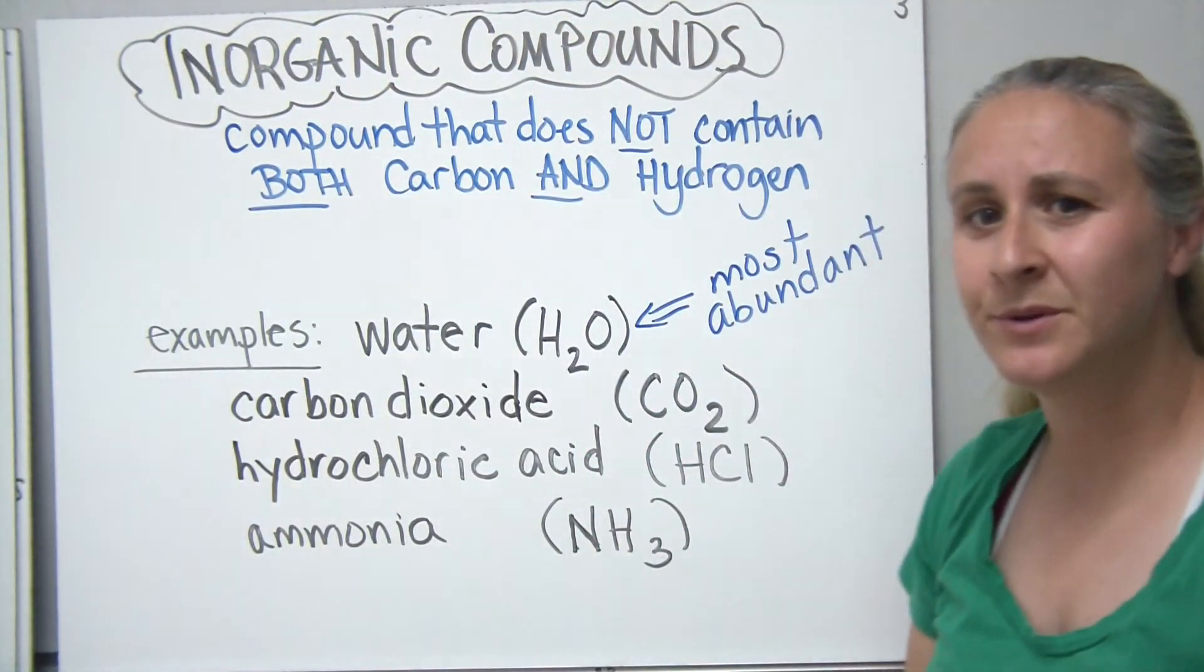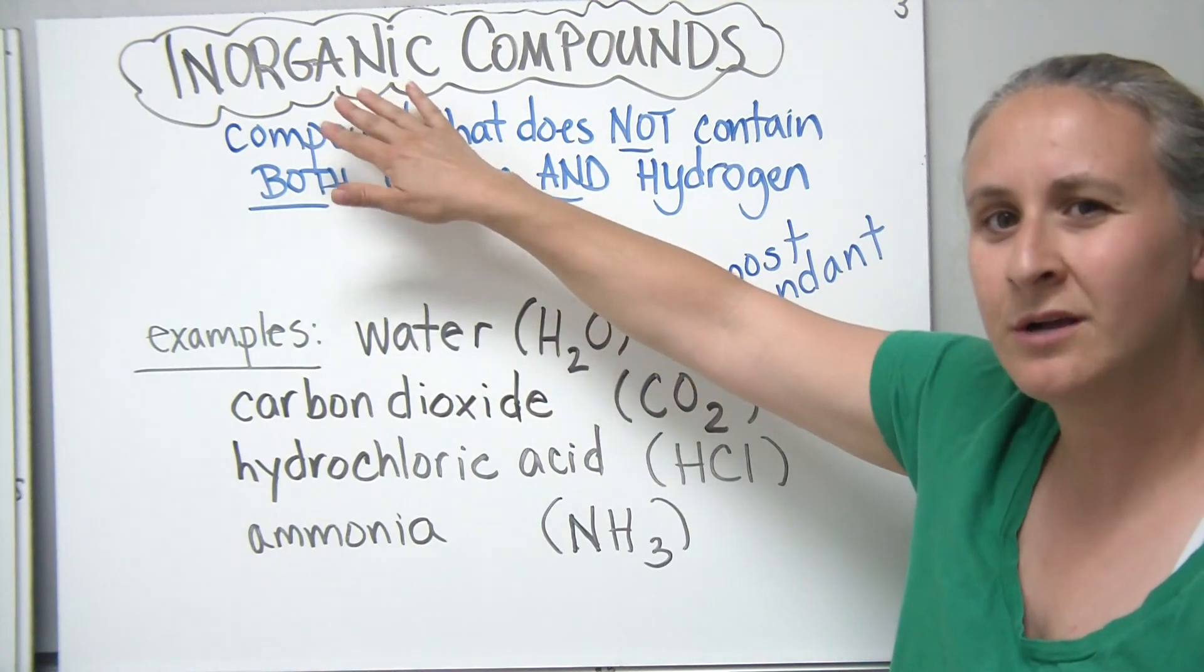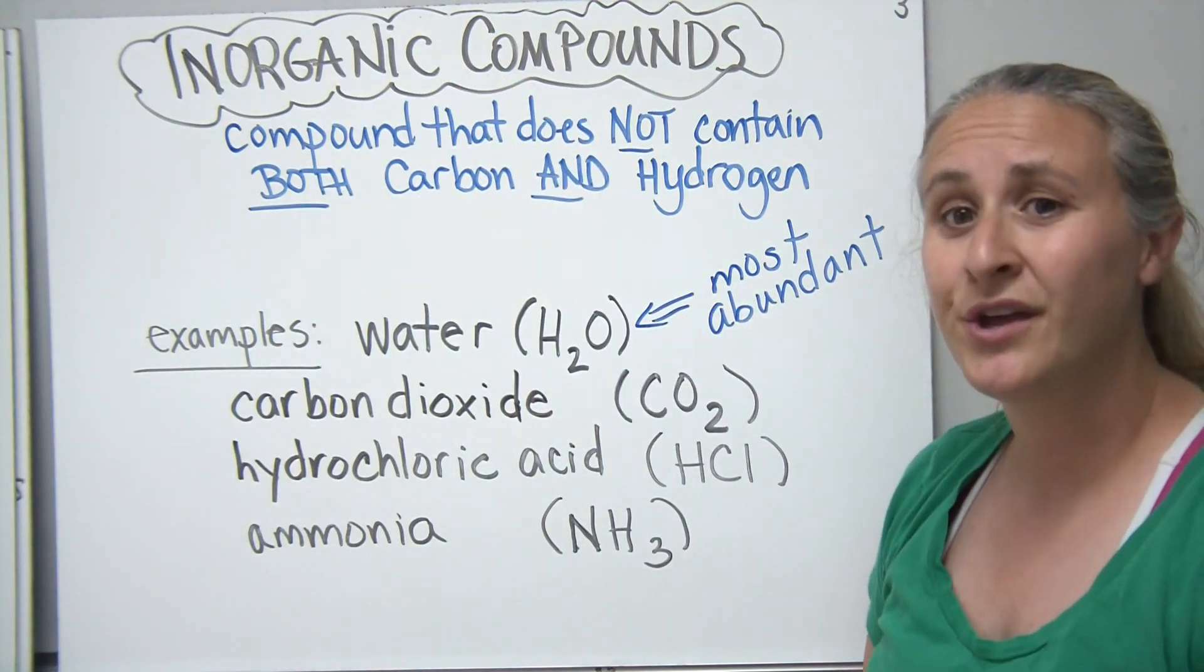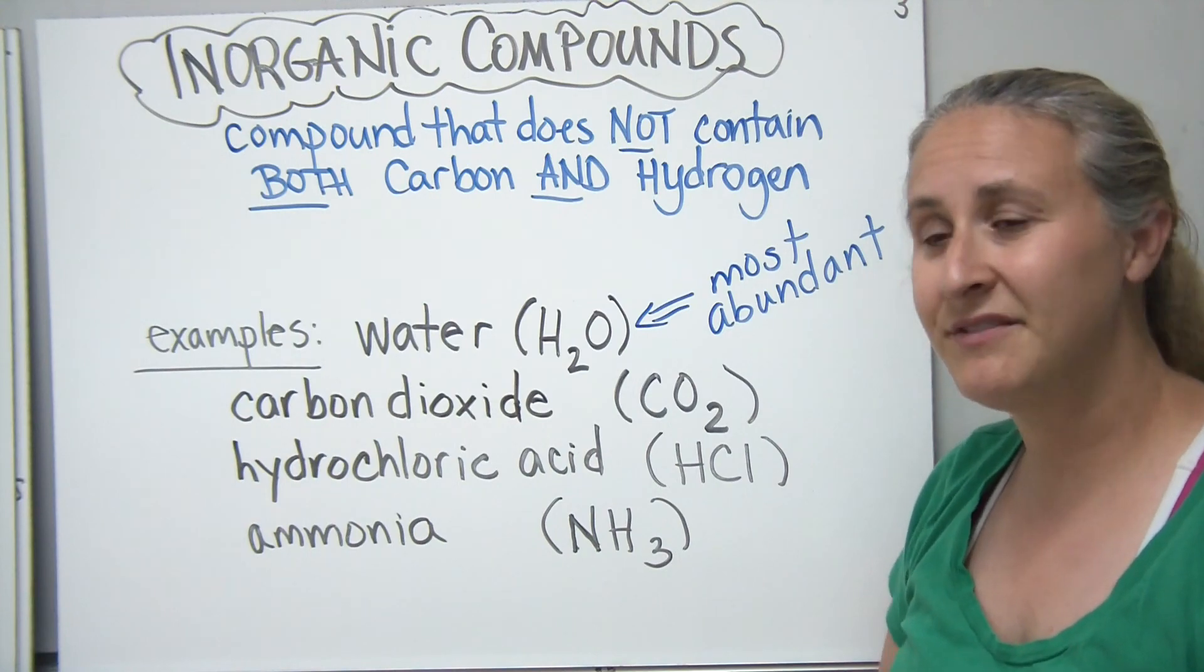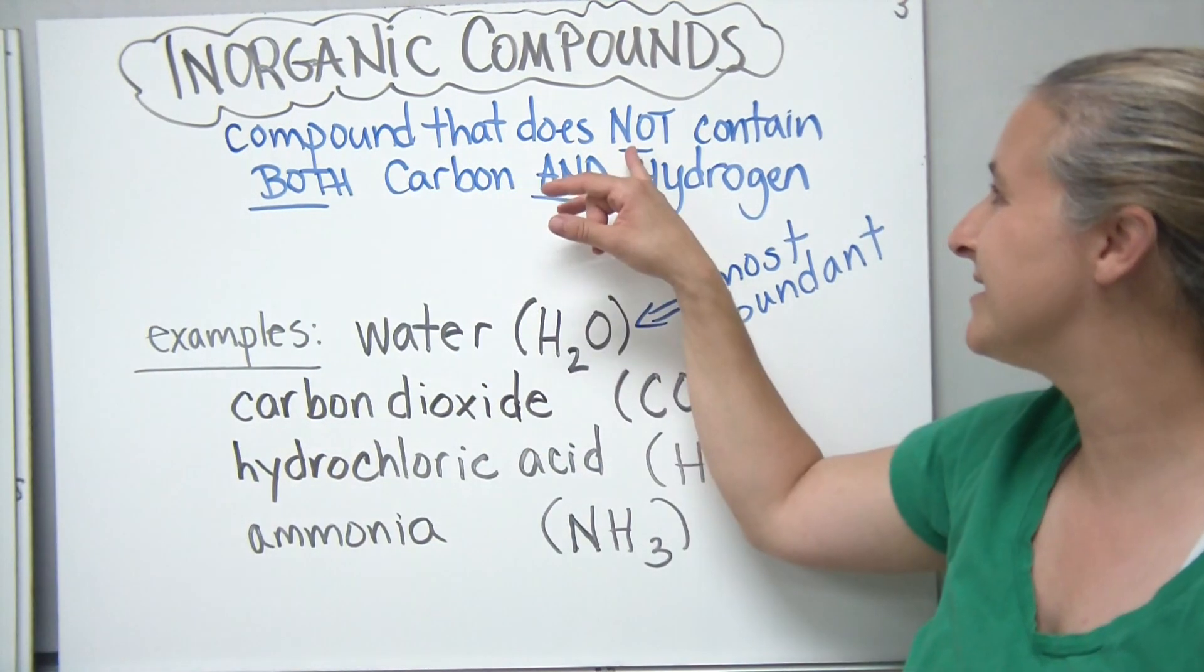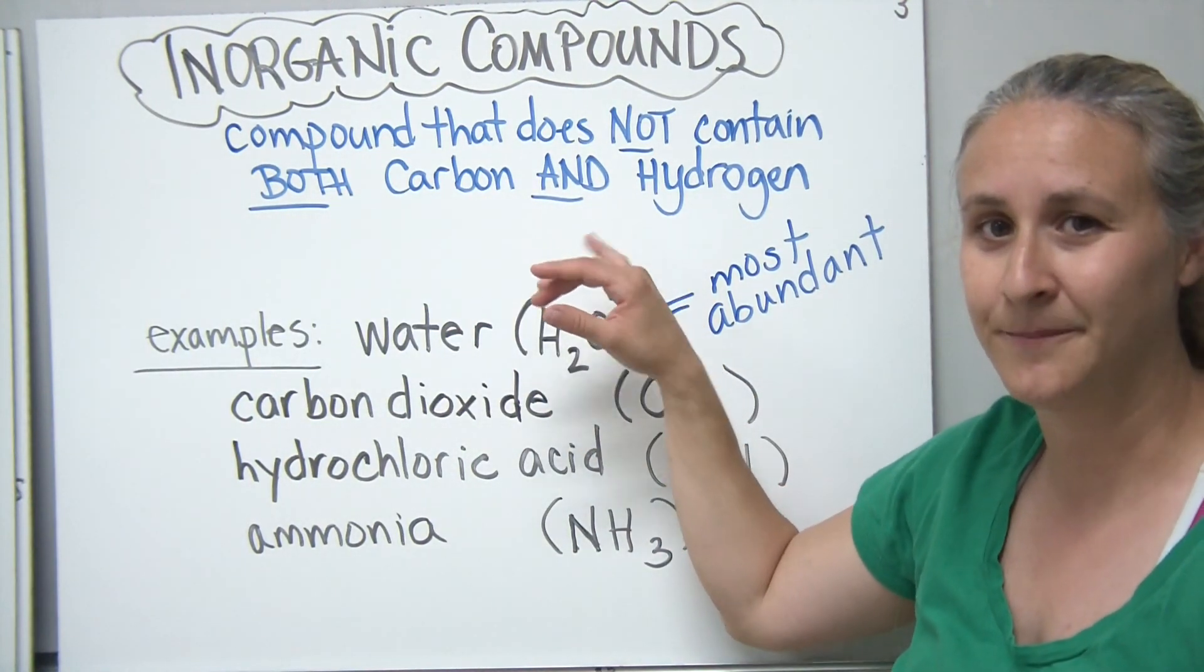Moving along, as we work into our chemical molecules, our chemical compounds, we can talk about different types of compounds. The first and the simplest are inorganic compounds. And the definition for that is that a compound that does not contain both carbon and hydrogen in them.